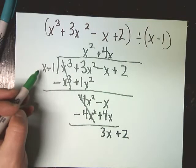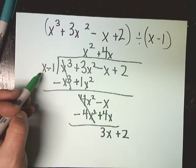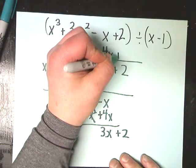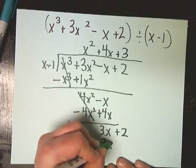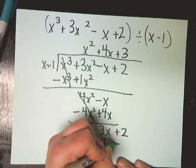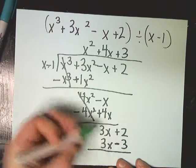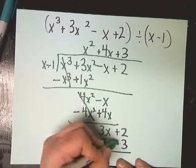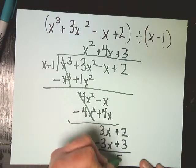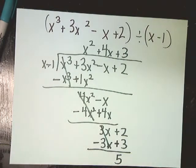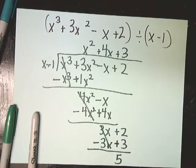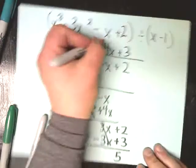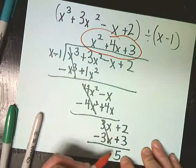And finally, I'm going to deal with multiplying by 3. And you get a remainder of 5. So I would say that my answer would be x squared plus 4x plus 3 with a remainder of 5.